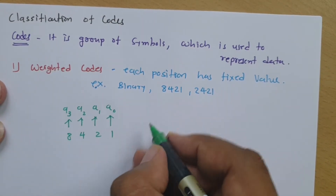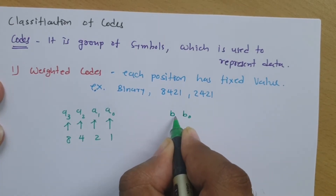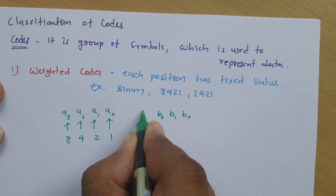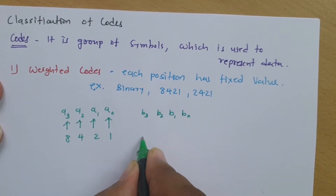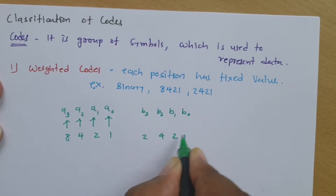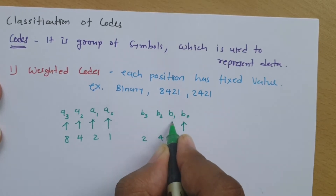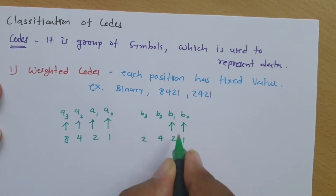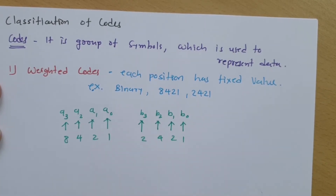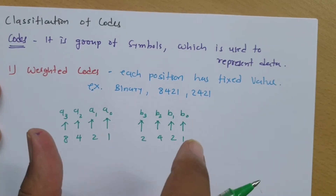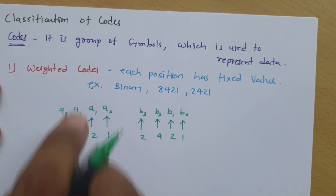For a second example, consider a 4-bit code B0, B1, B2, and B3 as a 2421 code. In that, B0 has value 1, B1 has value 2, B2 has value 4, and B3 has value 2. This is how fixed values are assigned with respect to position in a weightage code.